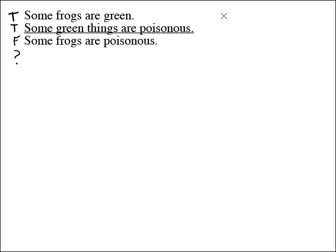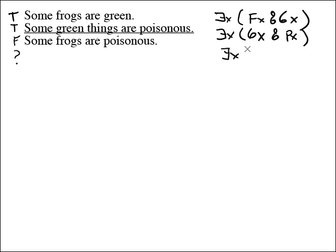Some frogs are green. That's obviously an existential. There is an x, fx, ampersand, gx. Some green things are poisonous. Another existential. There is an x, gx, ampersand, px. Some frogs are poisonous. There is an x, fx, ampersand, px.